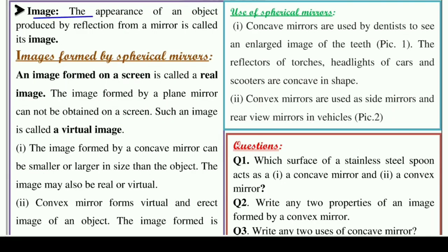The appearance of an object produced by reflection from a mirror is called its image. जब कोई भी source of light किसी mirror पर जाती है और वहाँ से reflect होकर हमारी eyes के अंदर enter करती है, तो हमें उसकी image नजर आती है। तो जो भी appearance होता है object का, mirror से light reflect होकर जो appearance बनाती है, उसे हम image कहते हैं।